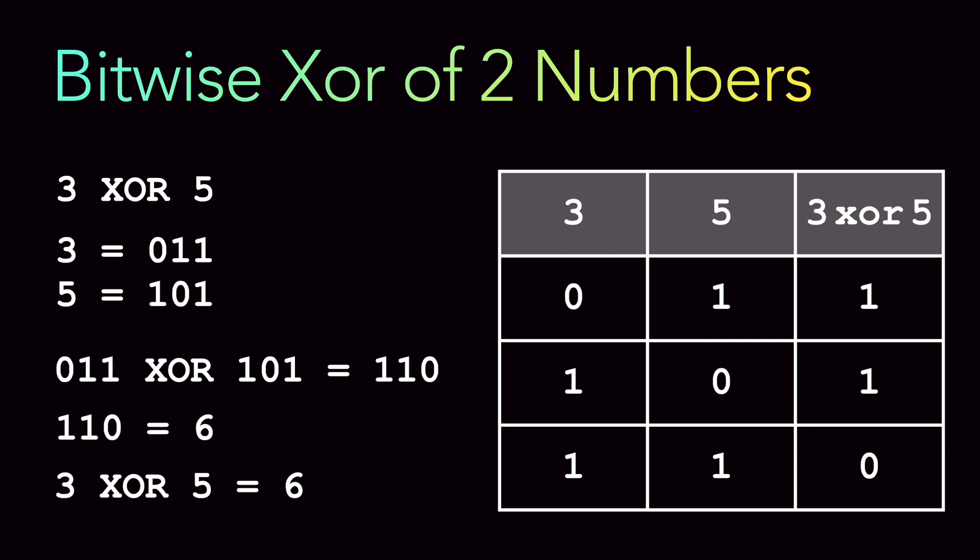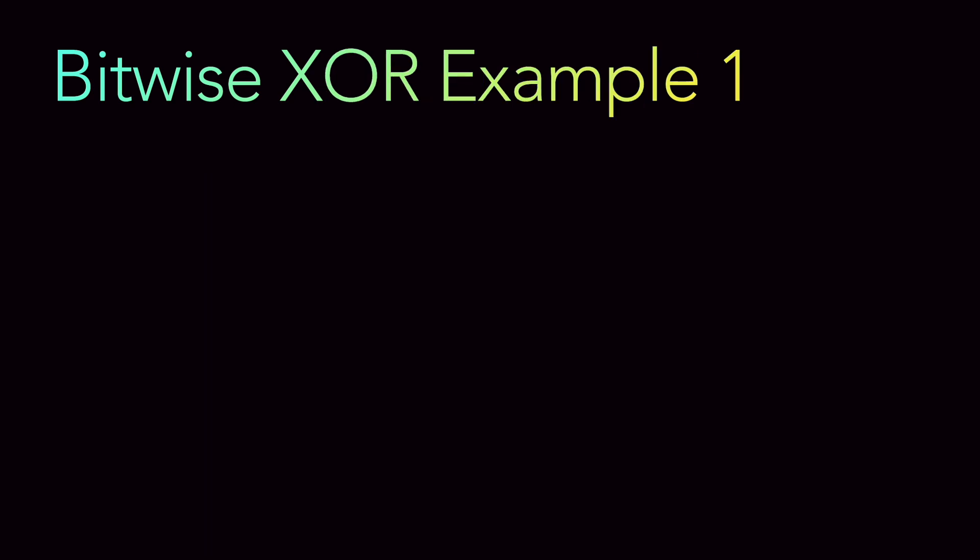So 3 XOR 5 gives you the value 6. Whenever you do a XOR of any numbers, you convert them to binary, perform the XOR, and then transform the binary result back to decimal. Let's look at a few examples that will make things very clear. The first is a very simple but cool example that many people might not be aware of.